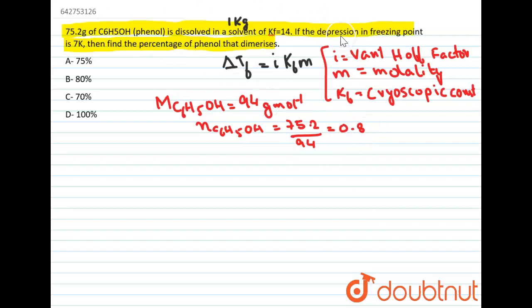Now the next thing which we have to do is to find out the value of vanthoff factor. Now because it is dimerizing, so we'll first write the equation. So two moles of phenol dimerizes to give an associated molecule of phenol.